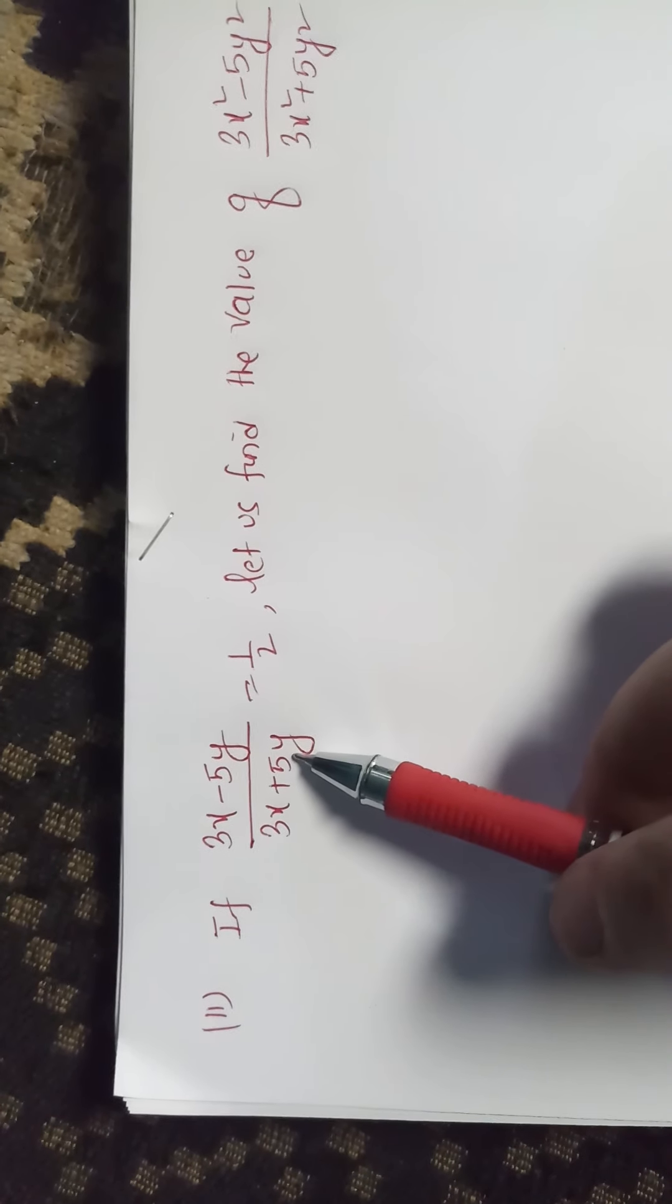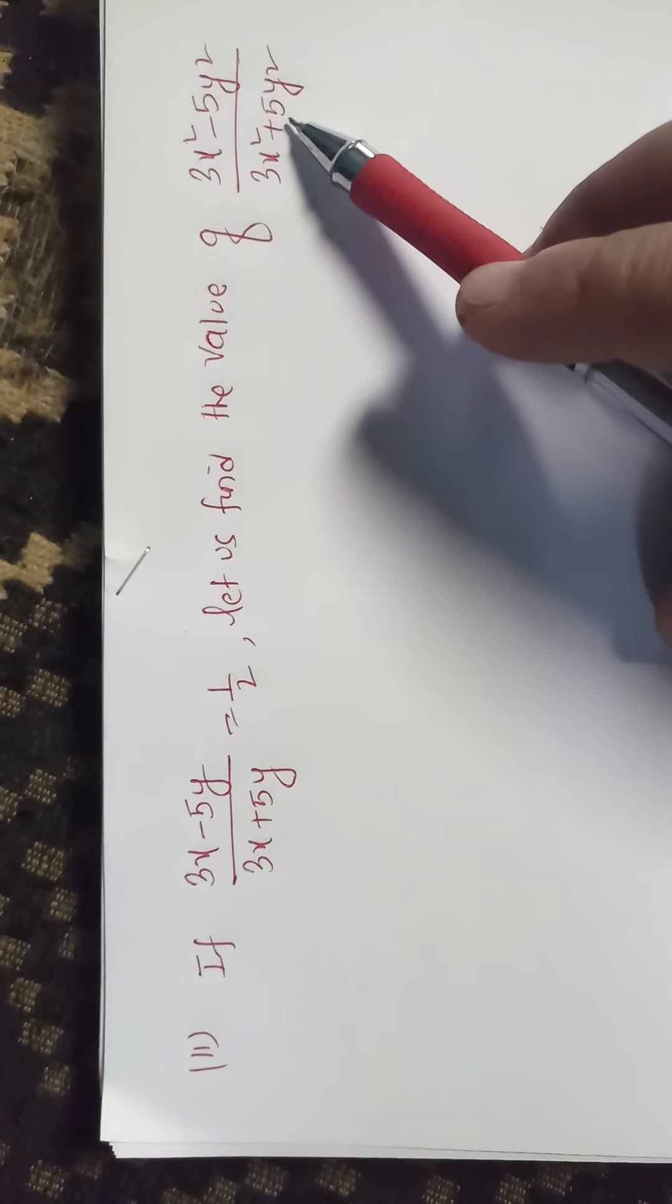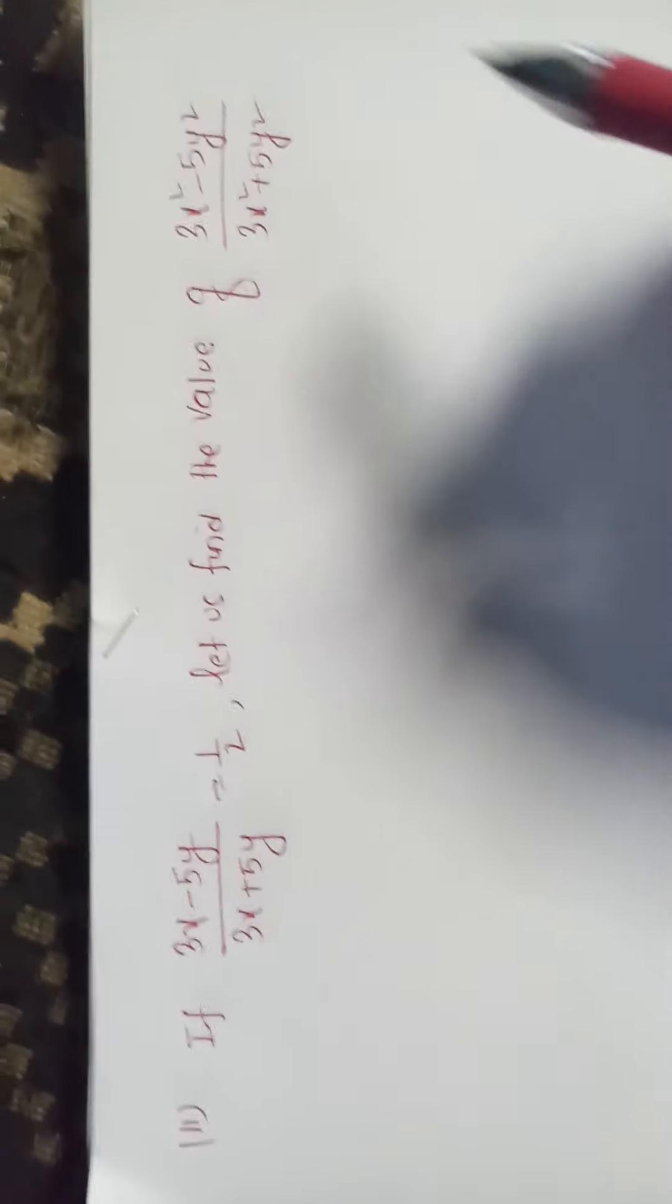If 3x minus 5y by 3x plus 5y equals to 1 by 2, let us find the value of 3x square minus 5y square by 3x square plus 5y square.